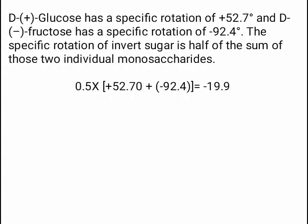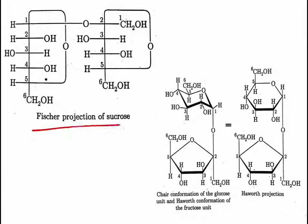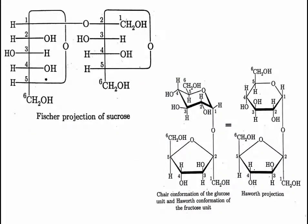D-glucose has a specific rotation of +52.7° and D-fructose has a specific rotation of −92.4°. The specific rotation of invert sugar is half the sum of those two individual monosaccharides, giving a value of −19.9°. The Fischer projection, chair conformation, and Haworth projection representations of sucrose are shown.